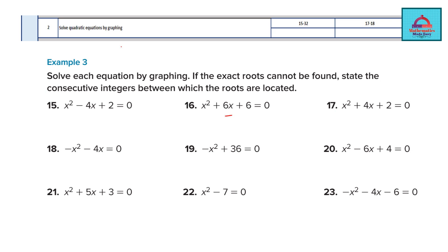In this session today we are covering learning objective 2 and will be solving questions 15 to 32 on pages 17 and 18 of your math book — that is, solve quadratic equations by graphing. You need to solve each equation by graphing, meaning you make a table of values, draw the graph, and if you cannot find the exact roots, state the consecutive integers between which the roots are located.